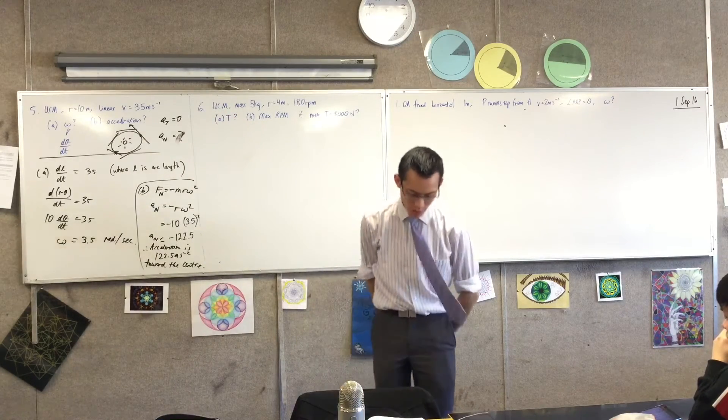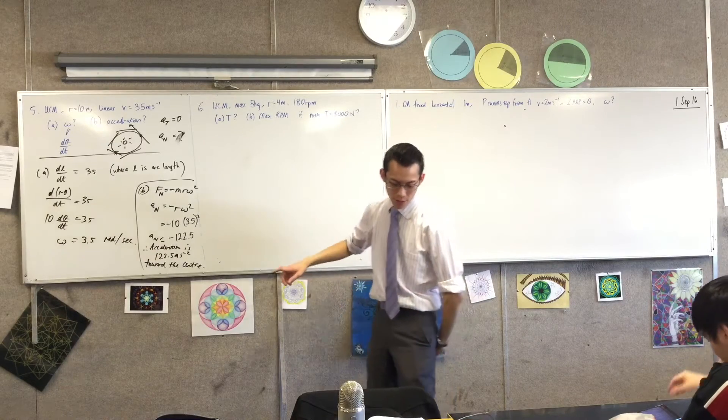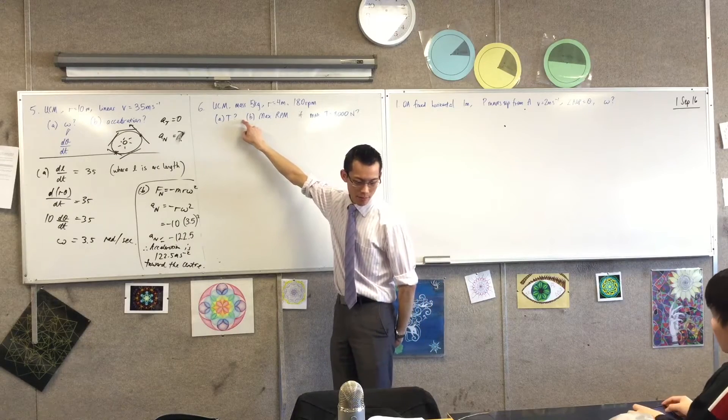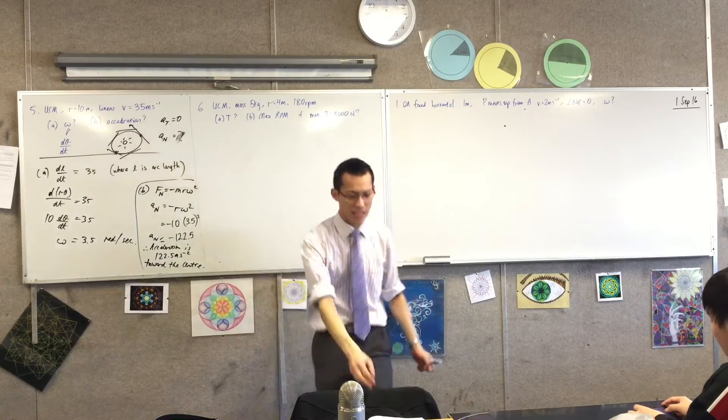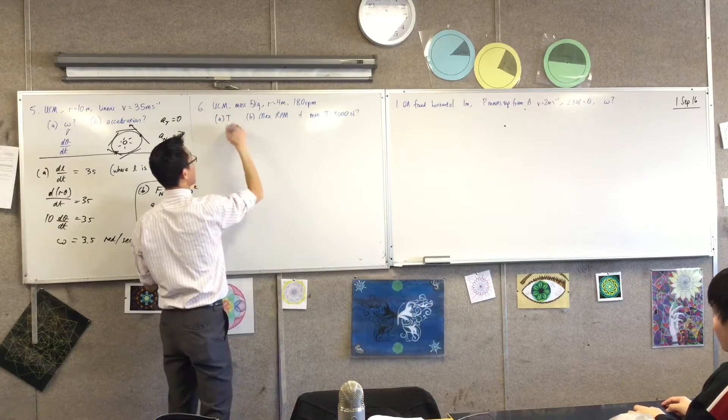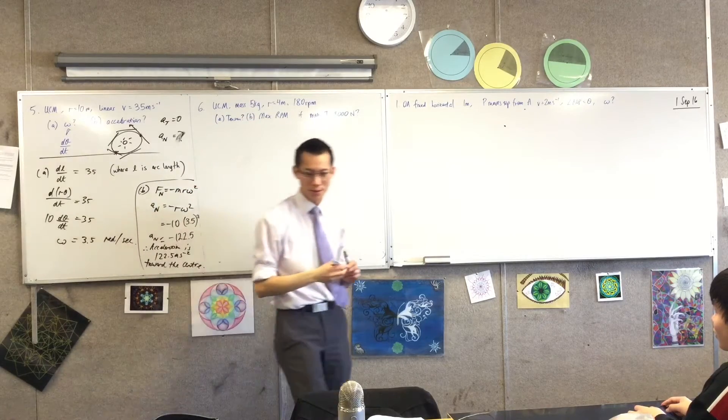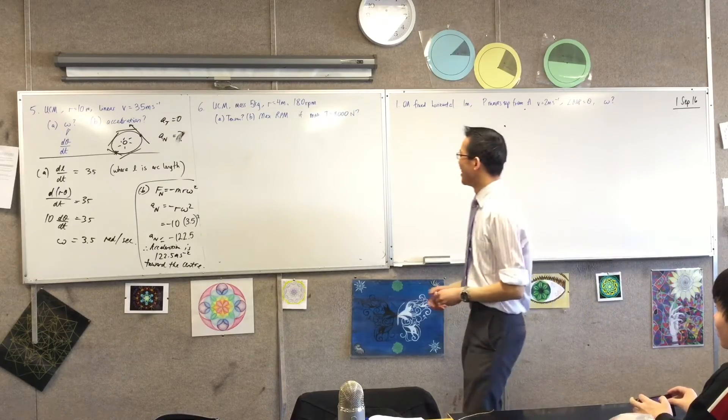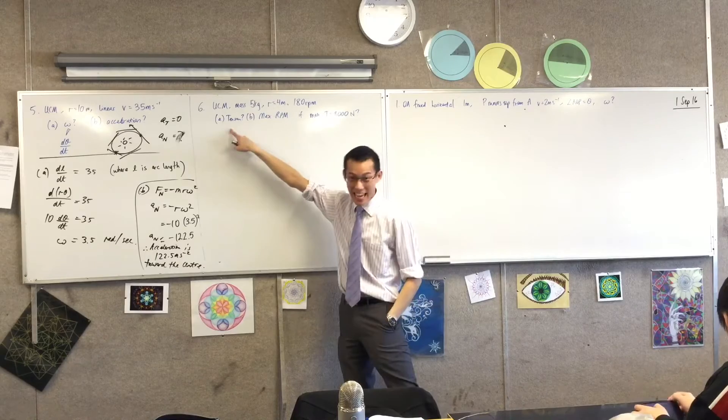Five kilograms, smooth horizontal surface, attached by a string to a point on the surface. What they want us to find is the tension in the string. When you say T, I think period. You can say just tension. I mean, you could use temperature, I suppose. That's why I was confused when he said T equals 8,000. The clue is newtons, but anyway, that's okay.